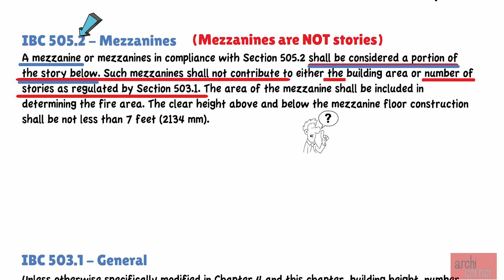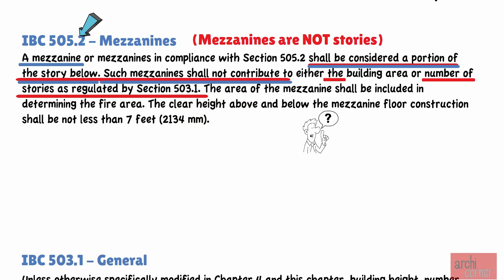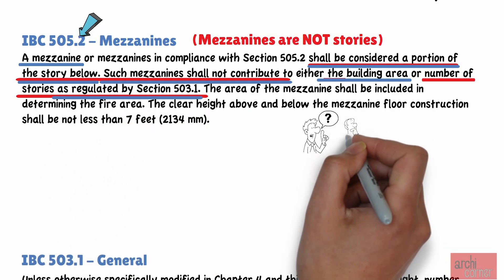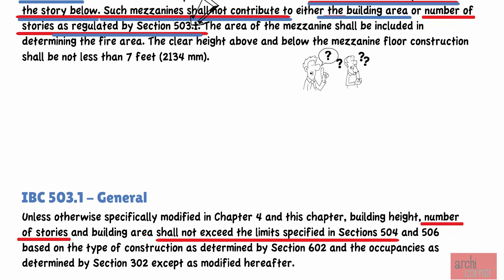Now, let's move to the second portion of code section 505.2. In this same section, 505.2, it states, such mezzanine shall not contribute to the building area, as regulated by section 503.1. The question again, what does this mean? To answer that, let's note that once again, this code references section 503.1, and section 503.1 references section 506.